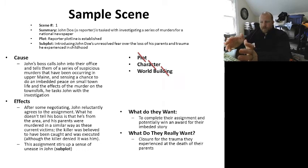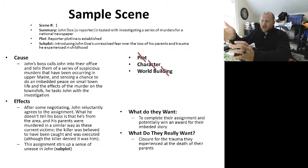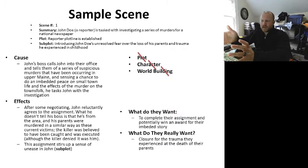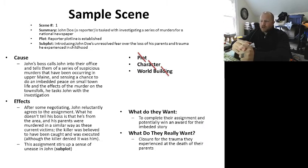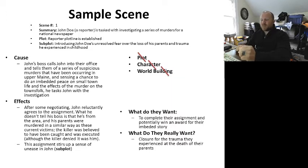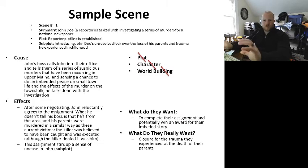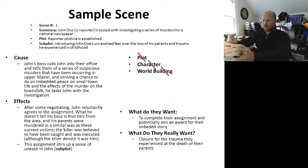Into the cause and effect: John's boss calls John into the office and tells him a series of suspicious murders have been occurring in Upper Maine. Sensing a chance to do an embedded piece on small town life and the effects of murder on the townsfolk, he tasks John with the investigation. That is the cause. The effect: after some negotiating, John reluctantly agrees to the assignment. What he doesn't tell his boss is that he's from the area and his parents were murdered in a similar way as the current victims. The killer was believed to have been caught and executed, although the killer denied it. There's a second effect: the assignment stirs up a sense of unease in John, tying back into the subplot of his unresolved fears and loss of his parents.